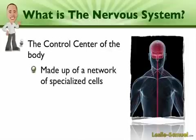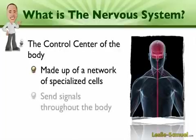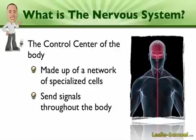The nervous system is made up of a network of specialized cells, and we're going to get into more details of this in a later episode. What makes these cells unique is that they can send signals throughout the body, and they can do it quite rapidly.